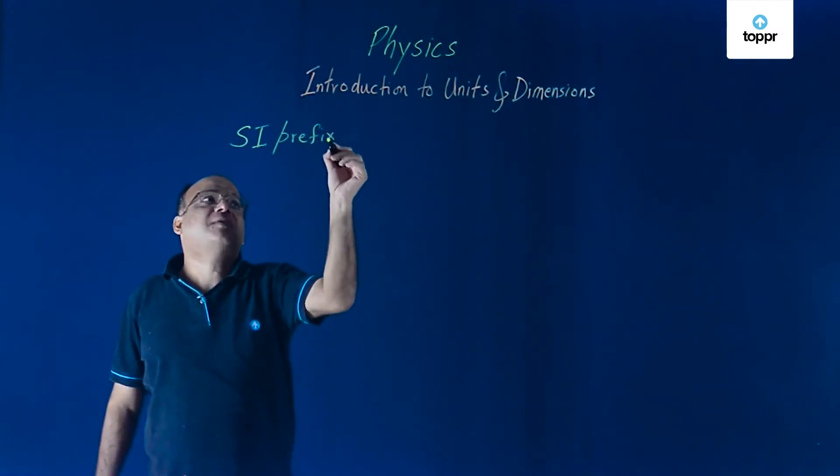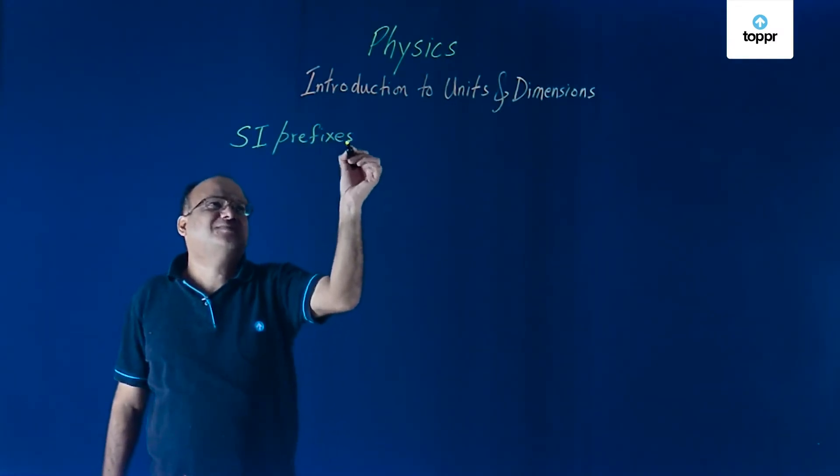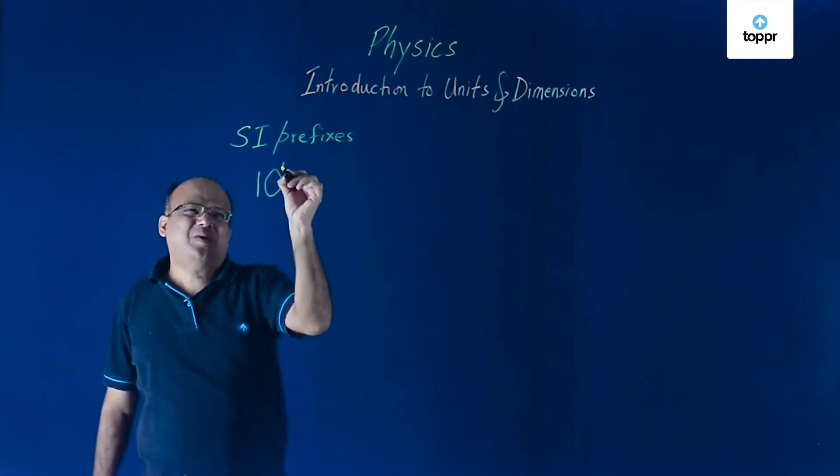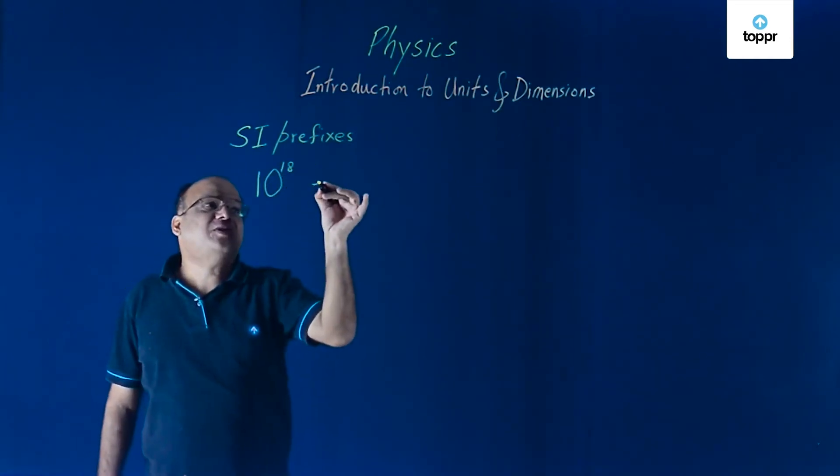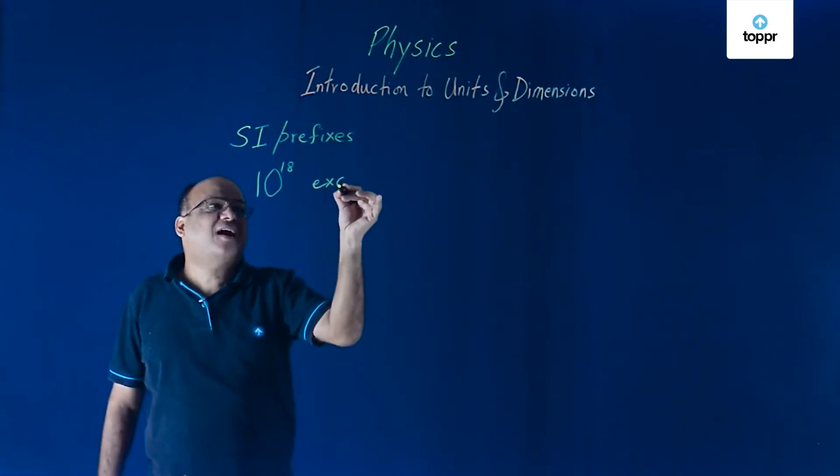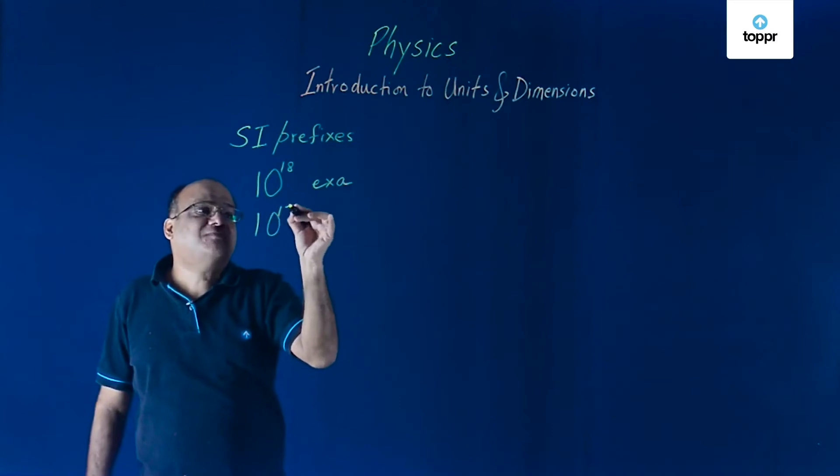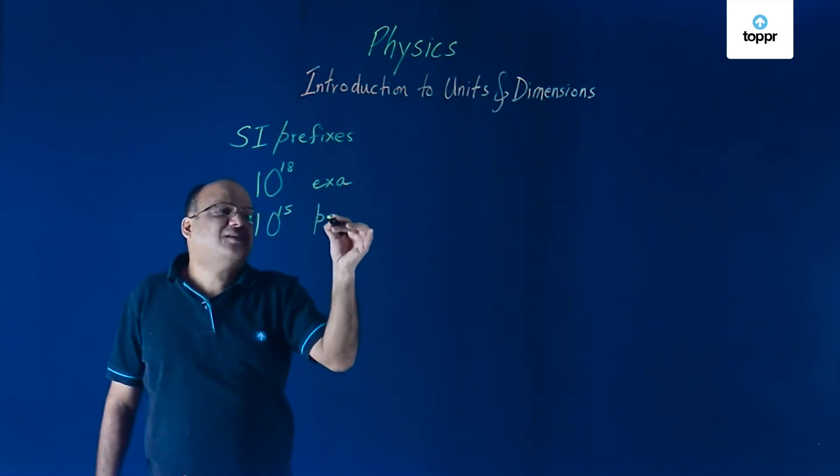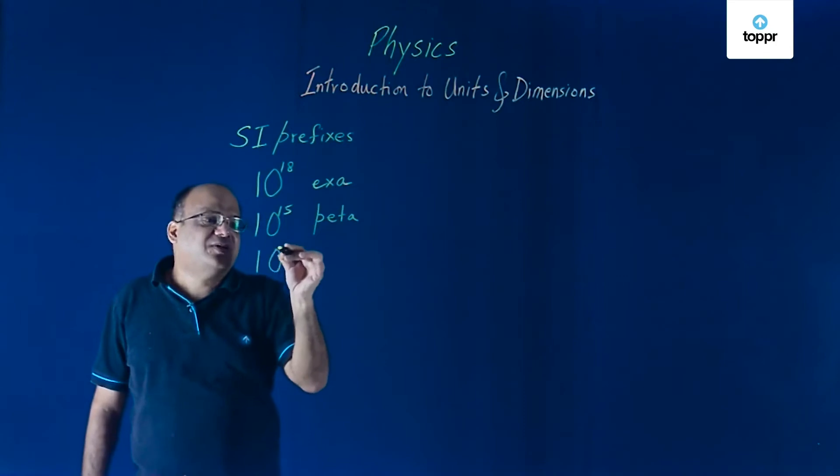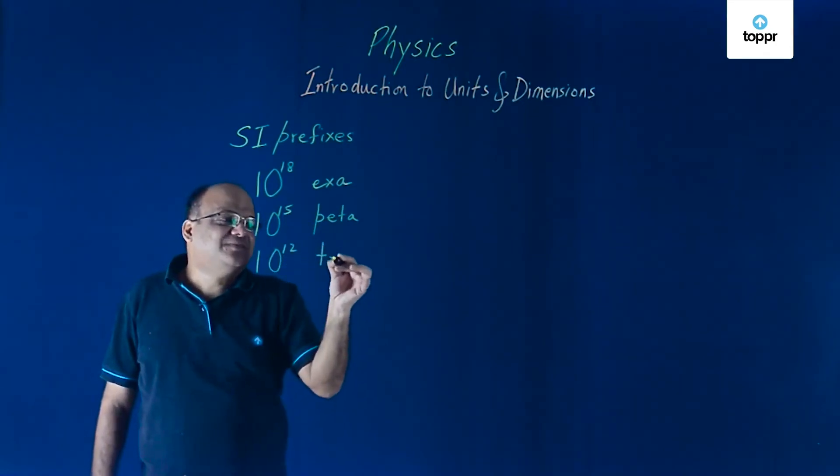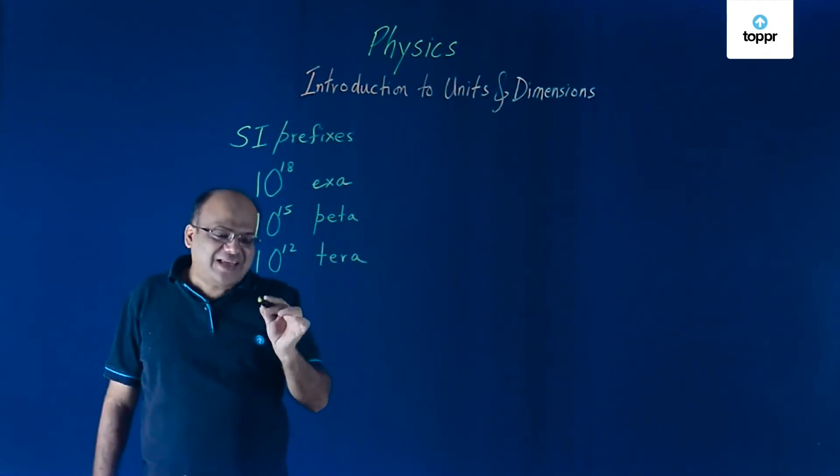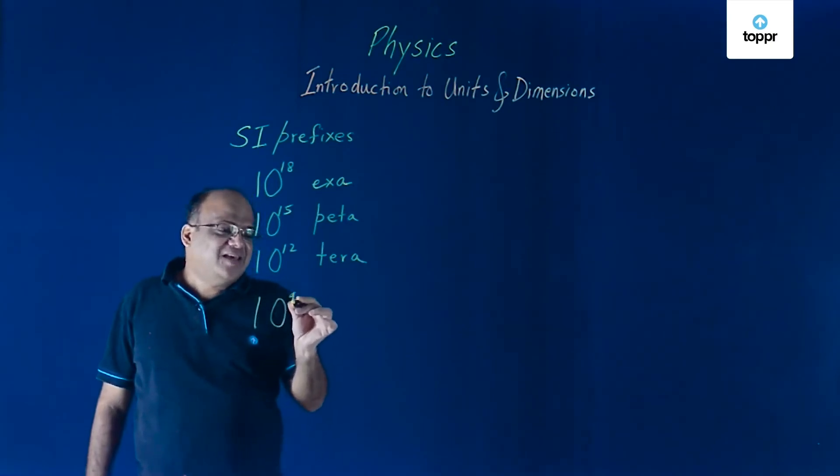Let's start with 10 to the power 18. Quite big, right? 10 to the power 18 is called EXA. 10 to the power 15 is called PETA. 12 is TERA. 9 is GIGA.